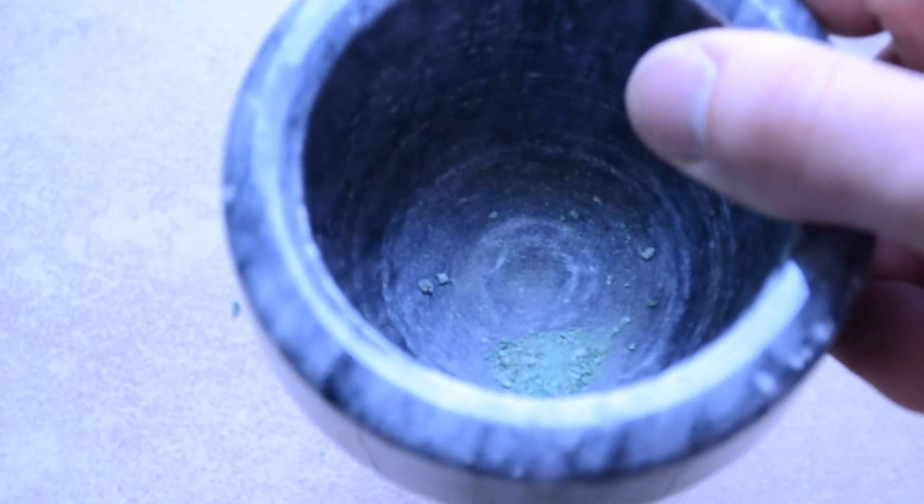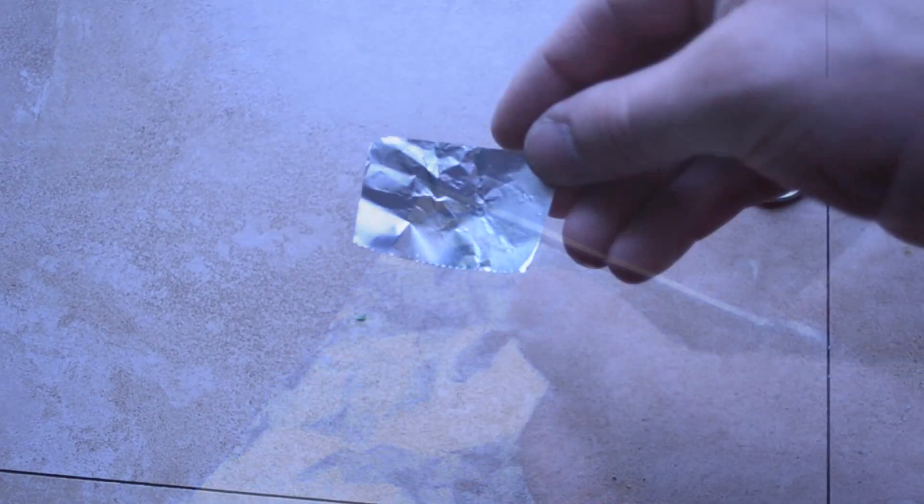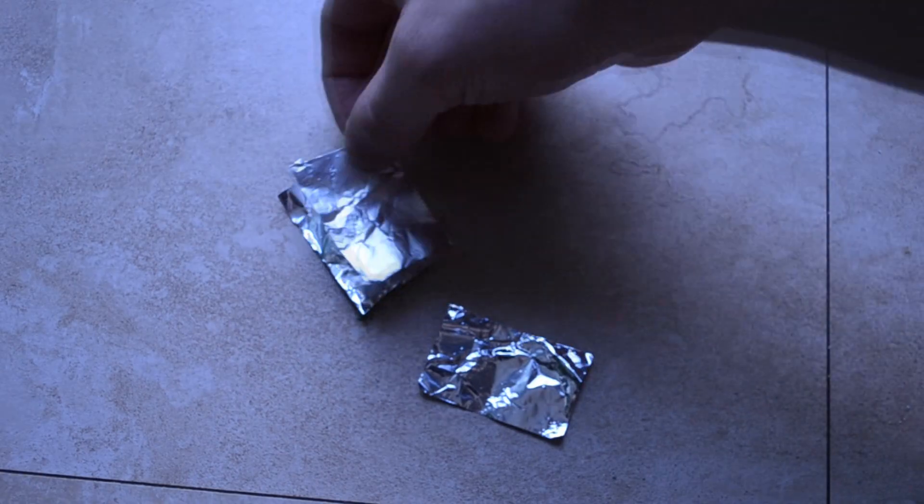Now we'll make the actual percussion cap. Cut a piece of tinfoil long enough to cut a square about the size of a small matchbook. You'll need three in total. Then lay the three sheets over each other.